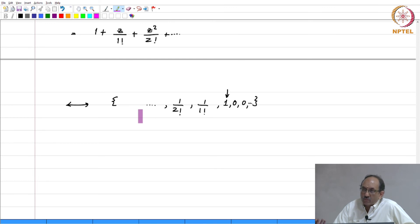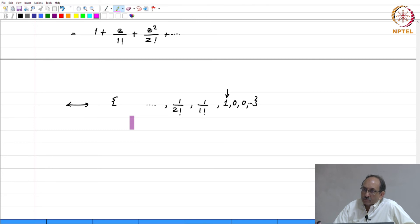If it is a finite duration sequence, the ROC is the entire z plane except possibly for 0 and/or infinity. The main point is: e to the z is not a rational function. This method — power series expansion — is applicable to functions that are both rational and non-rational. Whereas partial fraction expansion, as we have seen, is applicable only for rational transfer functions.